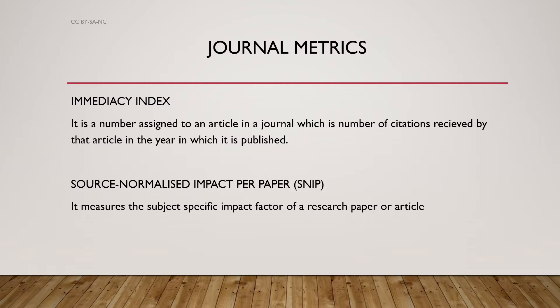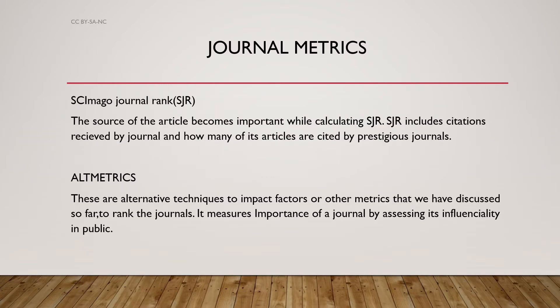The Image Index is the number assigned to an article in a journal, which is the number of citations received by that article in the year it was published. SNIP — Source Normalized Impact per Paper — measures the subject-specific impact factor of a research paper or article. SJR — SCImago Journal Ranking — the source of the article becomes more important while calculating SJR, which includes citations received by a journal and how many of its articles are cited by prestigious journals.